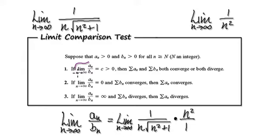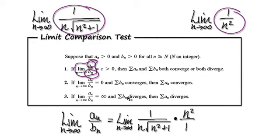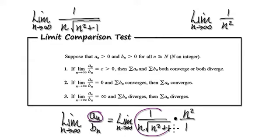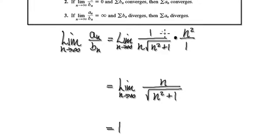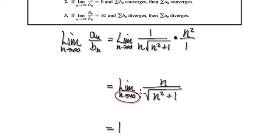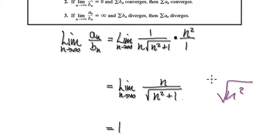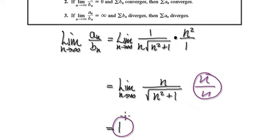With the limit comparison test, we always need to compute the limit of aₙ divided by bₙ. So aₙ divided by bₙ — which is the same as multiplying by the reciprocal of bₙ. Tidy this up: n squared means this n will cancel out with one of the n's at the top. Then we compute the limit as n tends to infinity. This expression will act as n squared, and square root of n squared is n. So we get n over n, and the limit as n tends to infinity equals one.